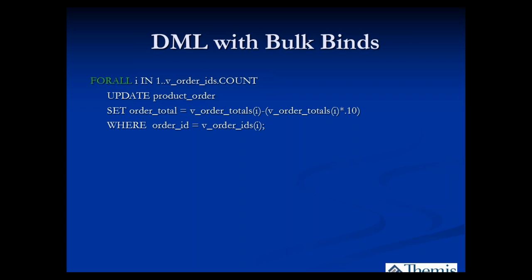For DML operations, the FORALL statement is key. Instead of an UPDATE inside a FOR loop causing 50,000 context switches, a FORALL with an UPDATE is a single statement — potentially reducing to just one context switch. However, remember that if PL_SQL_OPTIMIZE_LEVEL is set to 2, Oracle may already be converting your FOR loops to BULK COLLECT with a limit of 100, which is why you might not see a performance difference after manually converting your code.